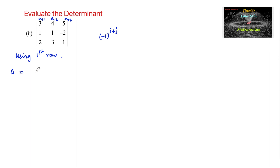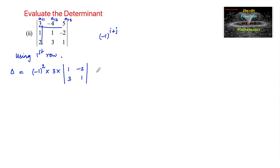For the first term: (-1)^(1+1) × 3 × det of sub-matrix [1, -2; 3, 1]. For the second term: (-1)^(1+2) × (-4) × det of sub-matrix obtained by deleting that row and column, which gives [1, -2; 2, 1].